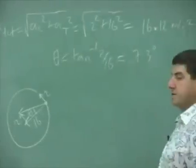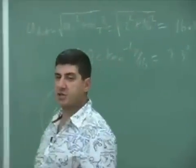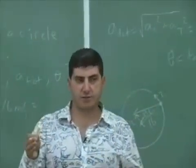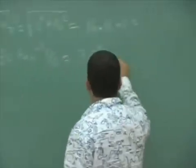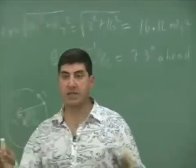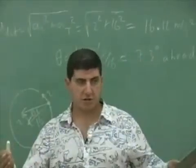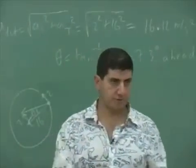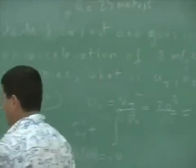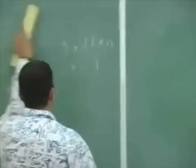In other words, the total acceleration is only 7 degrees ahead of the centripetal. It's close to the centripetal. That means the centripetal acceleration is dominating the acceleration. The tangential acceleration is small. Now, let's do a second example so that I can show you what happens.